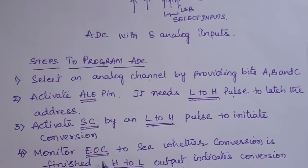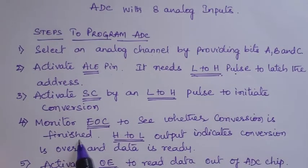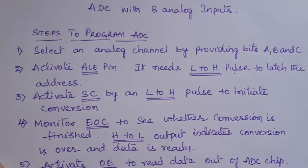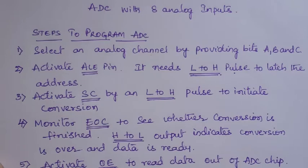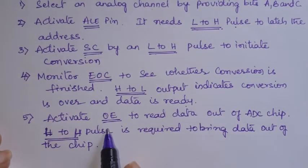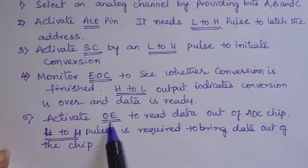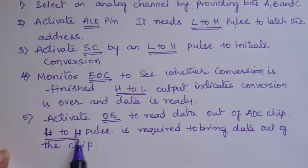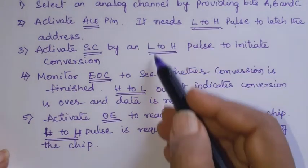Step 4 — monitor end of conversion to see whether the conversion is finished. EOC is a high-to-low signal: normally it is high, and once conversion is over it becomes low. This high-to-low transition indicates the data is ready. Step 5 — activate output enable to read the data from the ADC chip. Output enable is low-to-high: make it high to bring the data out of the chip. These are the steps needed to get the digital data.